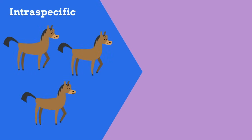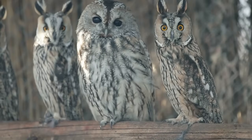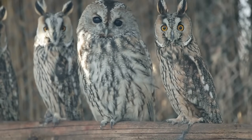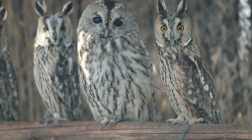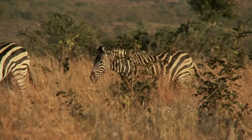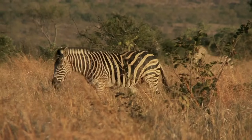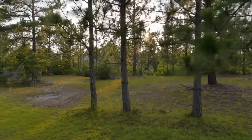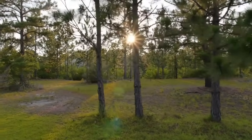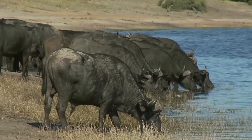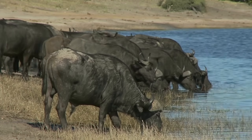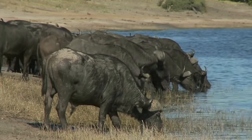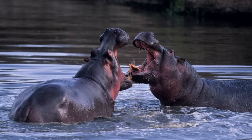Intraspecific competition is competition within the same species. These owls compete against one another for the same rats, moles, and shrews. These male zebras compete with one another for a female mate. These pine trees growing close to one another compete for sunlight and nutrients in the soil. These water buffalo compete against one another for water, food, and a mate. And these hippos are also competing for food, water, and possibly a mate.